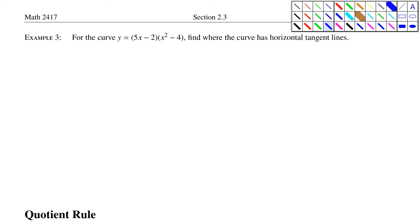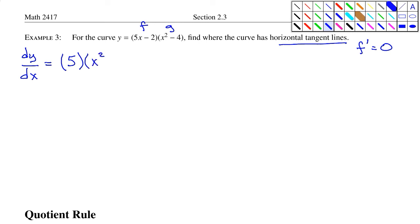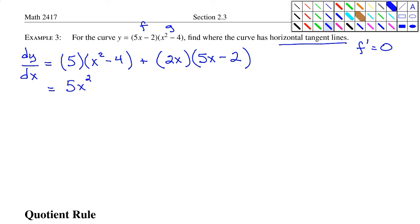Example number three: for the curve y equal to 5x minus 2 times x squared minus 4, find where the curve has horizontal tangent lines. Horizontal tangent lines occur when the derivative equals zero. So dy/dx is equal to — this is a product, so we use the product rule — the derivative of the first is 5 times the second unchanged, plus the derivative of the second, 2x, times the first unchanged, 5x minus 2. Simplifying by distributing: 5x squared minus 20 plus 10x squared minus 4x.